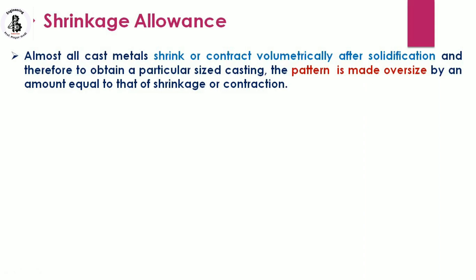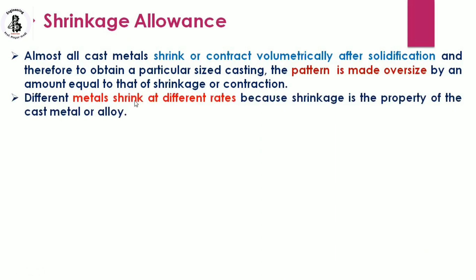The equal amount added to account for shrinkage or contraction is known as the shrinkage allowance. Every material shrinks during solidification, so for better dimensional accuracy, shrinkage allowances must be considered. Different metals shrink at different rates because shrinkage is a property of the cast metal or alloy, depending on the alloying elements added and their proportions. Calculations must be made for each particular material.